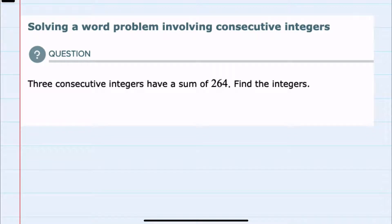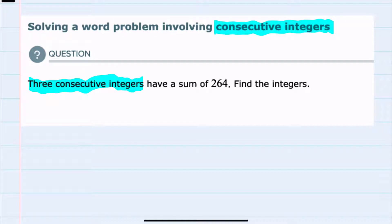In this video, I'll be helping you with the Alex problem type called solving a word problem involving consecutive integers. Our word problem will include consecutive integers, and here we're told that three consecutive integers have a sum of 264, meaning that they add up to 264, and we're asked to find the integers.